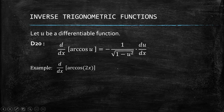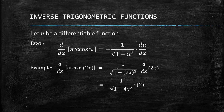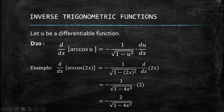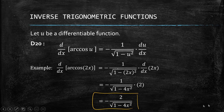So we have an example: arccos of 2x. Applying the formula, we have negative 1 over the square root of 1 minus the quantity (2x) squared, times the derivative of 2x. So we get negative 2 over the square root of 1 minus 4x squared after simplifying. You can still simplify further by rationalizing, but for this example we'll go with this. Again, we're just showing the formula.